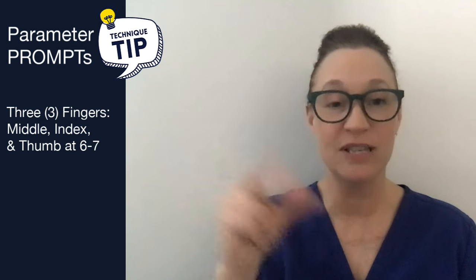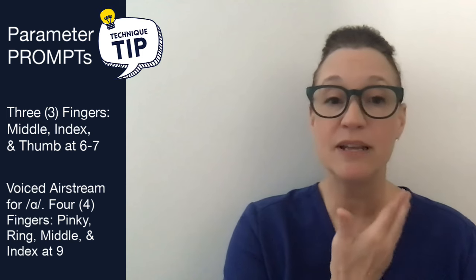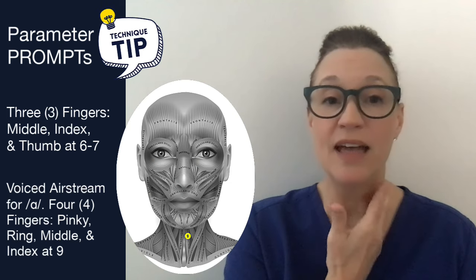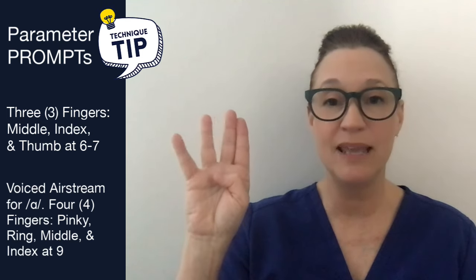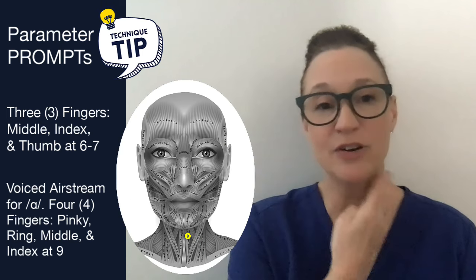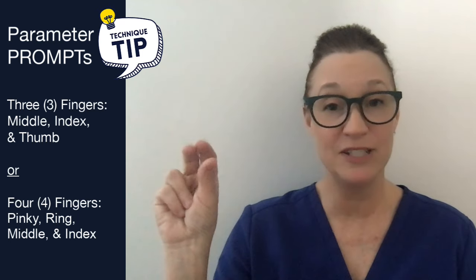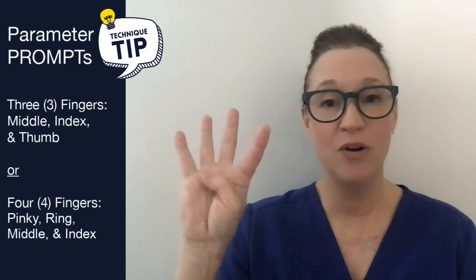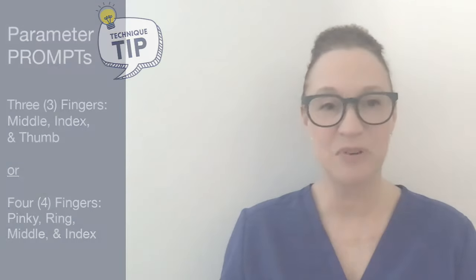Three fingers for those parameter prompts. Now, if you're looking to get a voiced airstream going for 'ah', you're simply going to be at point 9 for voicing, using four fingers: pinky, ring, middle, and index — right at point 9 for 'ah'. So for parameter prompts, you're either using three fingers or four. Those are some good technique tips for you.